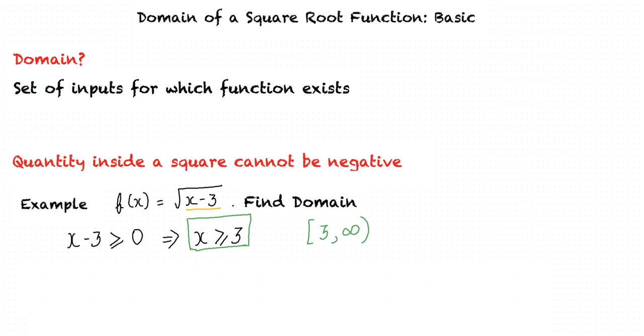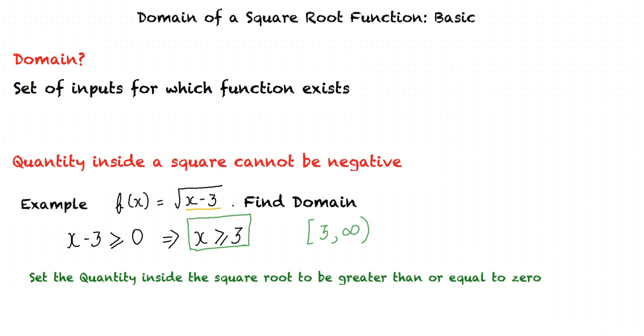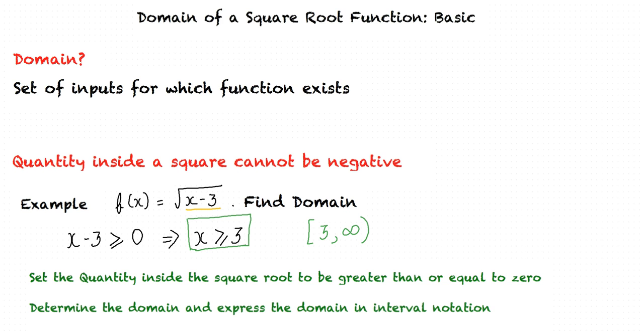I think I understand the concept. In order to determine the domain of a square root function, we first set the quantity inside the square root to zero or greater than zero. Finally, we determine the domain and represent it in interval notation.